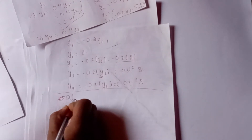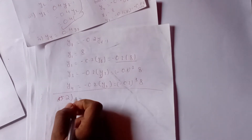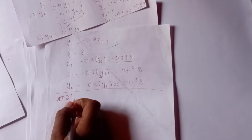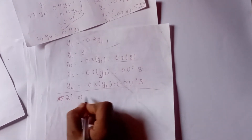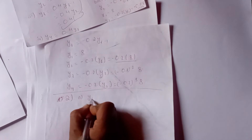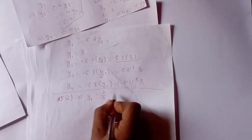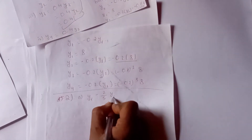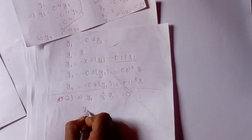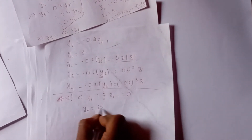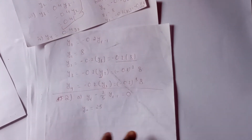Question number 2: find the first four terms of the sequence of solutions of the following difference equation. yt minus (2/5) times yt minus 1 equals 0, and y of 0 equals 25. We will work through this.